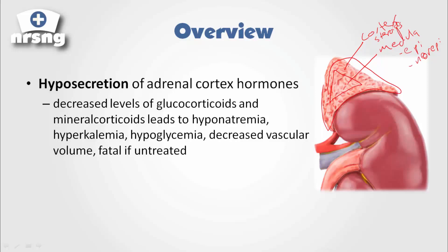These are secreted due to biofeedback from our body depending on different situations going on. Epinephrine and norepinephrine are part of the sympathetic nervous system — the fight or flight response. Steroids are going to decrease inflammation, decrease swelling, decrease immune response, and they can lead to increased blood sugars, so they play an important role in our body.